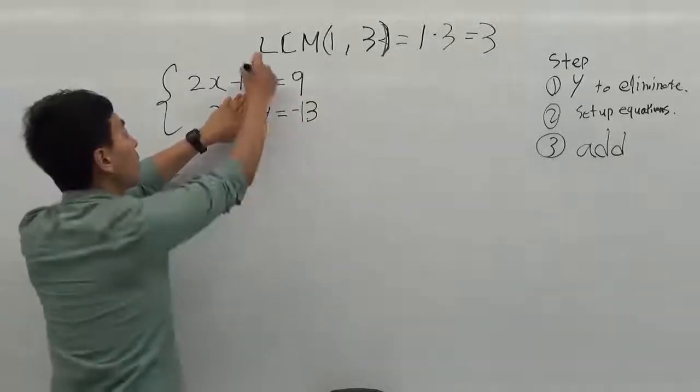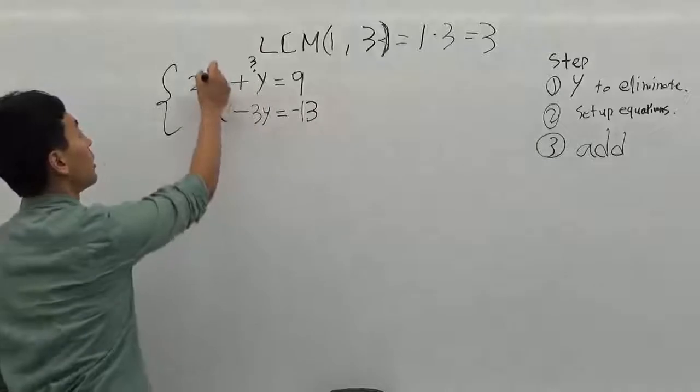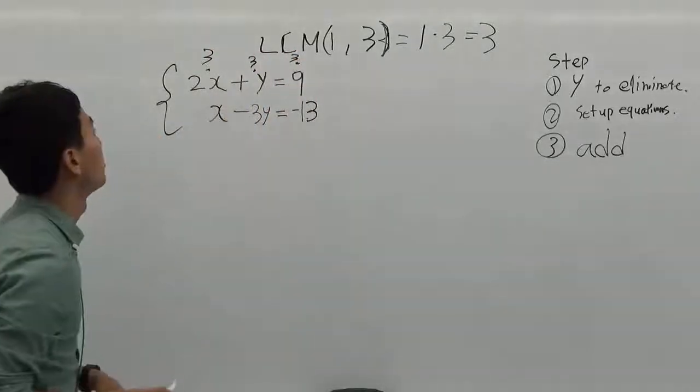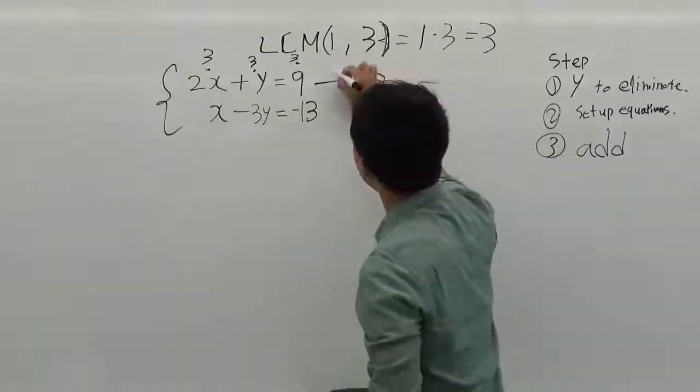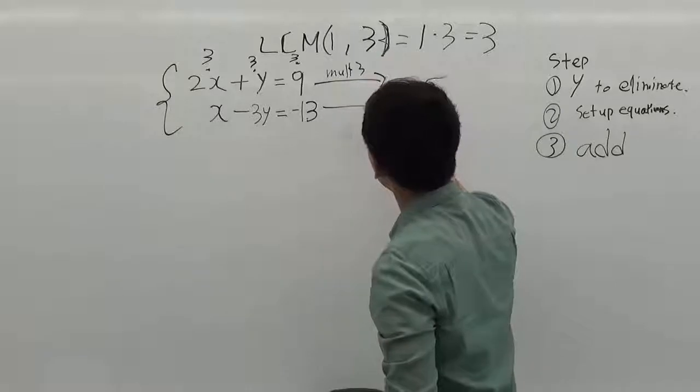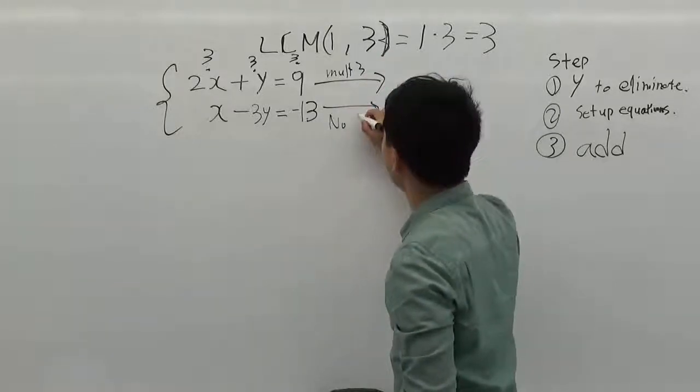But when we multiply by 3 here, we have to multiply by 3 also all the other numbers and variables. So this will be multiplied by 3. This is no changes.